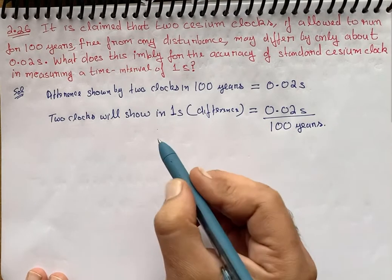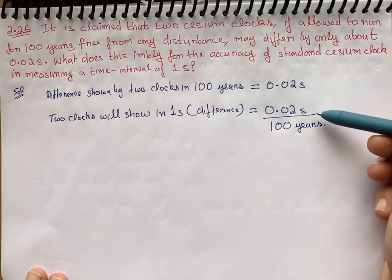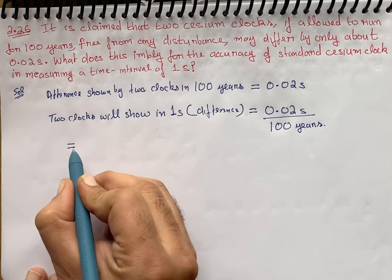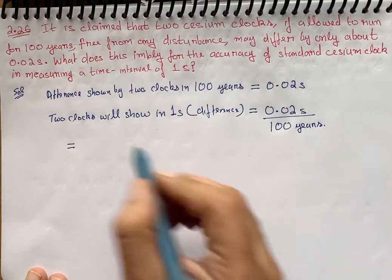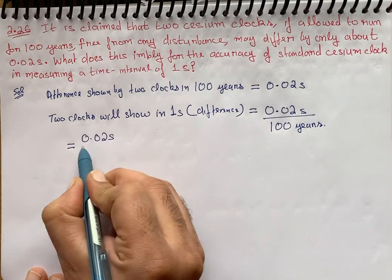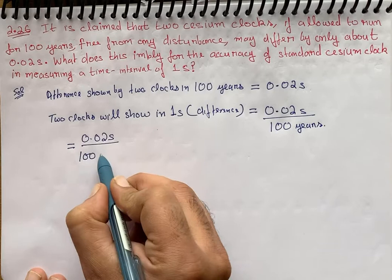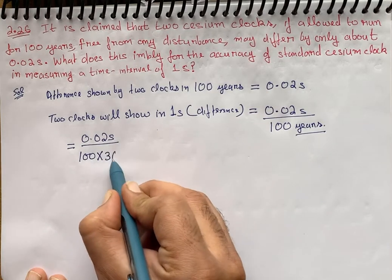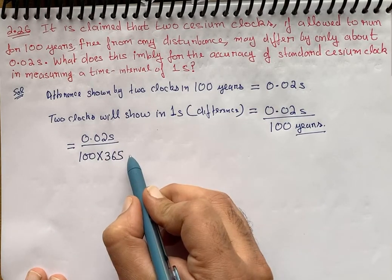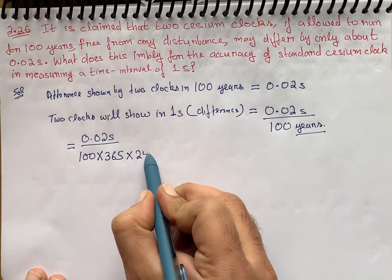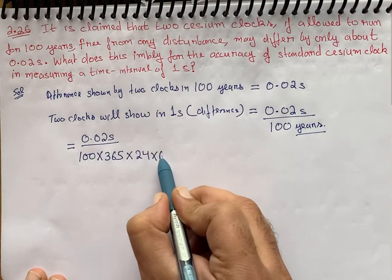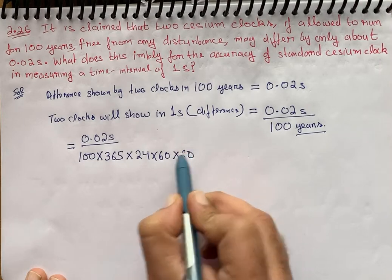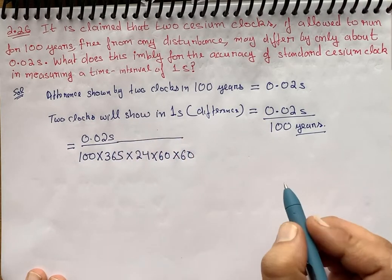For these calculations, see the numerator has seconds and denominator has years, so we have to convert years into seconds. So 0.02 seconds divided by 100 years. In one year there are 365 days, in a day we have 24 hours, in 24 hours we have 60 minutes, and in a minute we have 60 seconds.